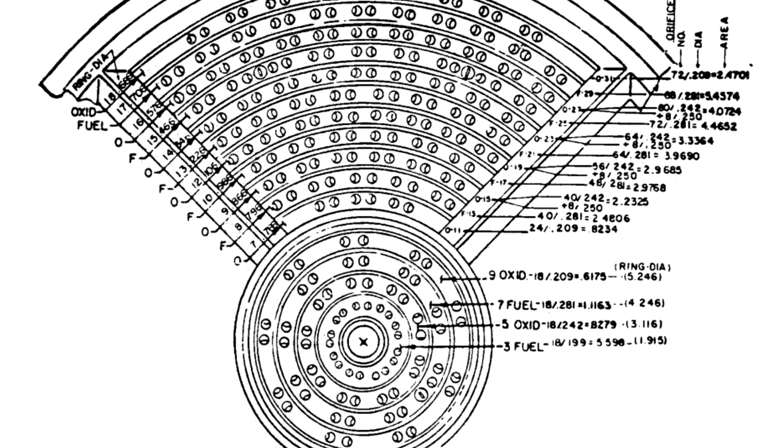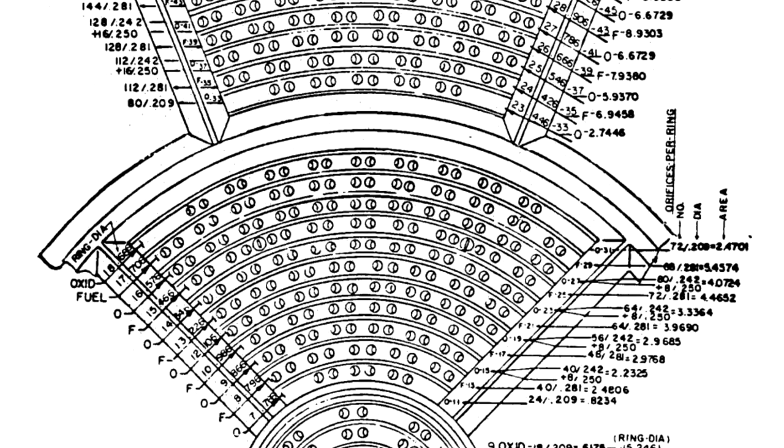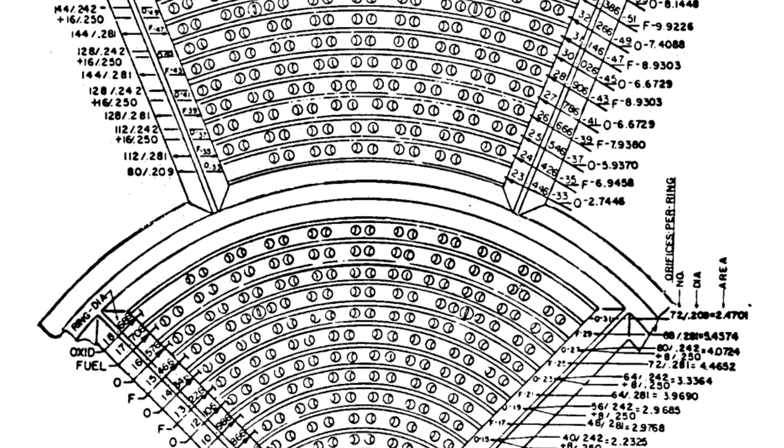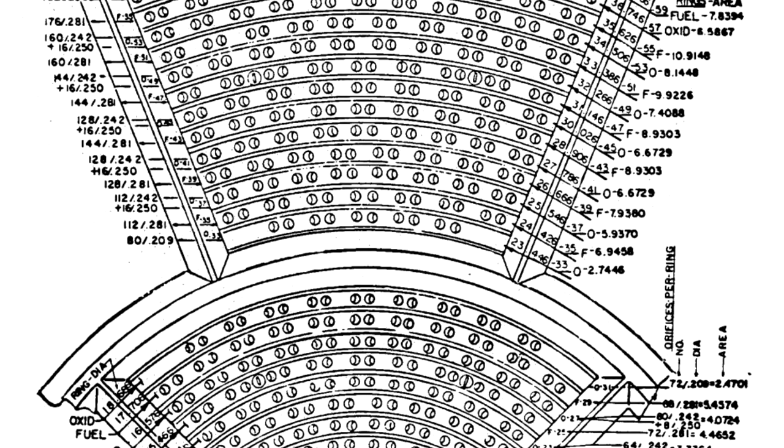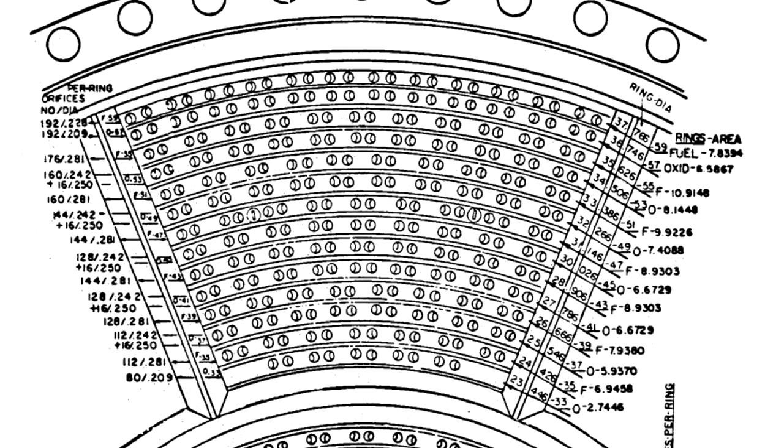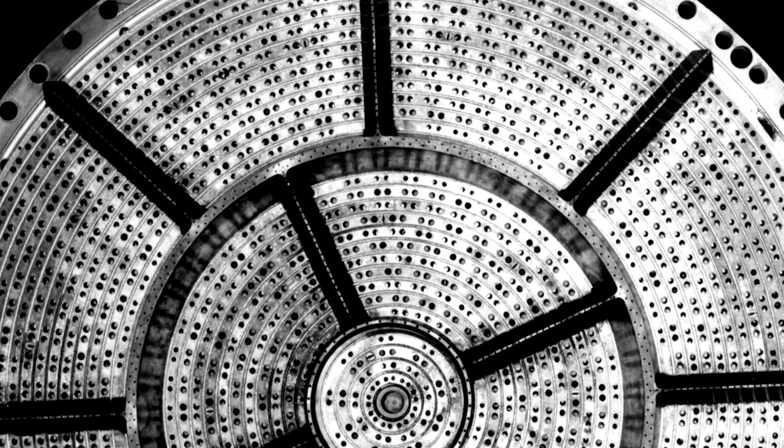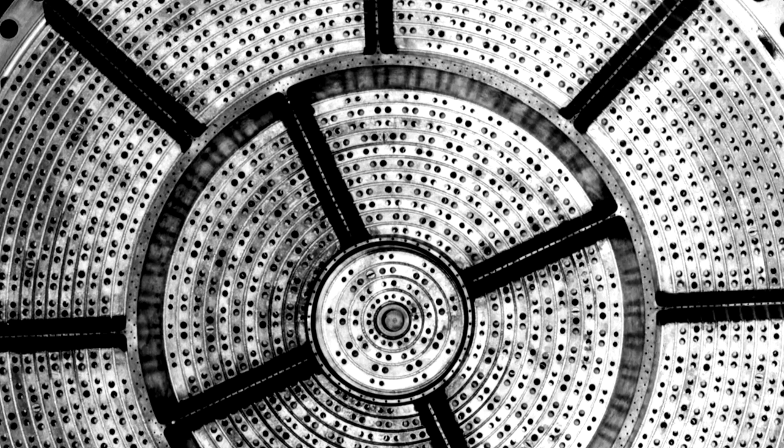On the final design there were 1428 oxidizer orifices and 1404 fuel orifices all paired up into doublets. And you can imagine this takes a very long time to make. You can also see that some pairs are larger than others because in the engine you have more liquid oxygen than liquid kerosene. So the oxygen holes are larger.